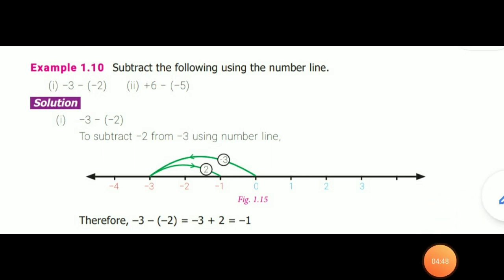Example 1.10: Subtract the following using a number line. First: minus 3 minus (minus 2). We have to subtract minus 2 from minus 3. Both are negative numbers, so draw the number line with 0 in the center, positive numbers on the right, and negative numbers on the left. Mark minus 3 from 0; from 0 to minus 3 is marked. Now subtract minus 2 from minus 3 by moving 2 steps: 1, 2. The answer is minus 1.